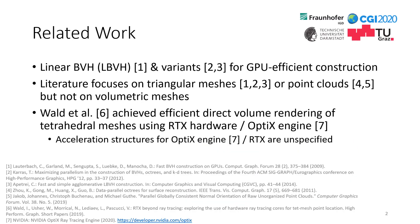Now I address previous work. The literature comprises the linear BVH and its variants for GPU-efficient construction. When it comes to GPU-amenable spatial data structures, the literature focuses on triangular meshes or point clouds, but not on volumetric meshes. However, volumetric meshes are frequently used in geometry processing. Another related work is the direct volume rendering method by Wald et al., which achieved efficient direct volume rendering of unstructured tetrahedral meshes using RTX hardware acceleration via OptiX. The acceleration structures for OptiX and RTX are not fully specified.